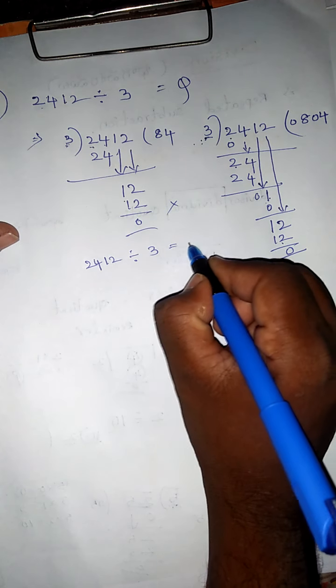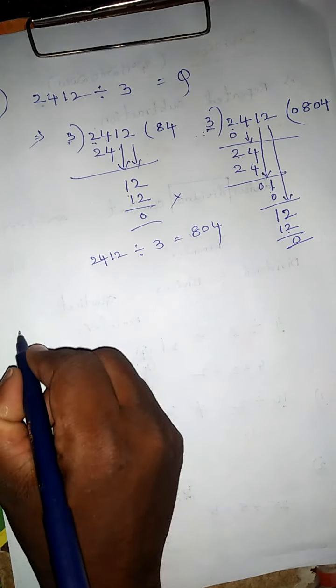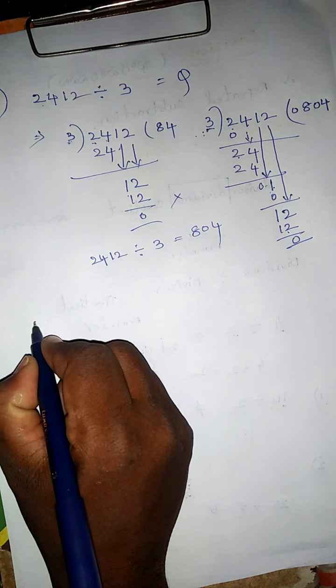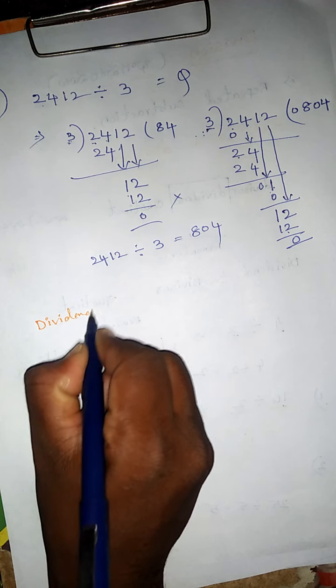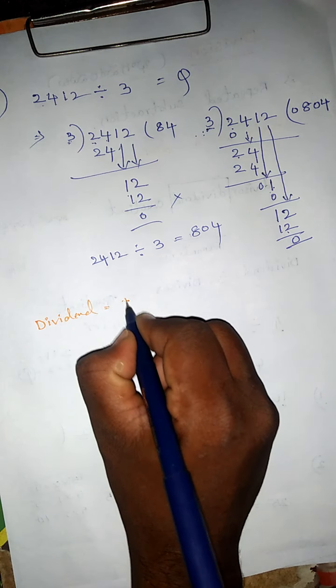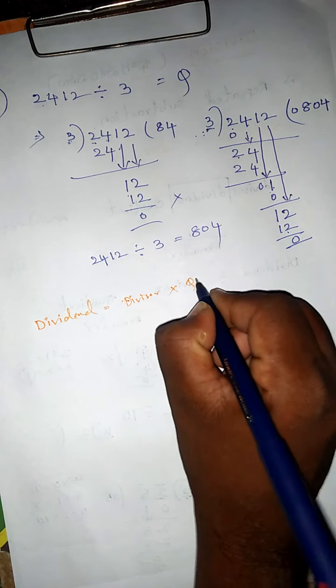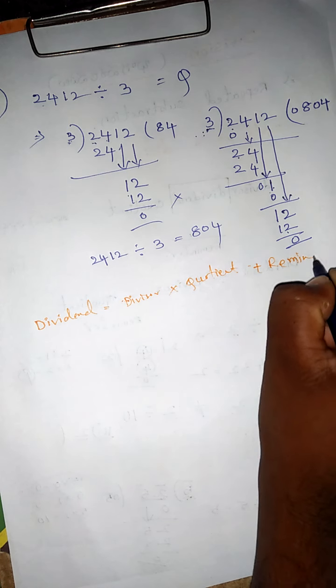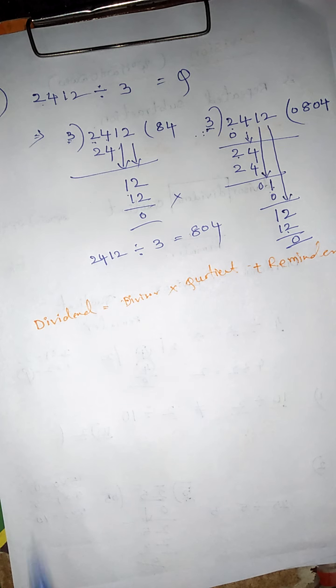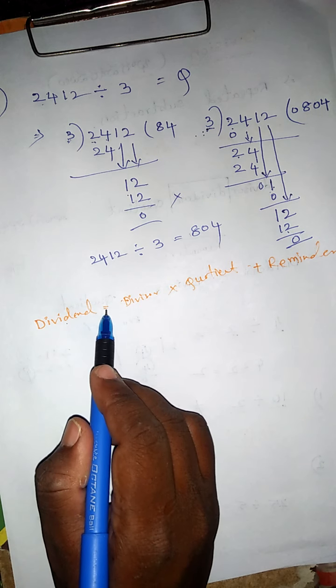To check if our answer is correct or wrong, the method is: dividend equals divisor times quotient plus remainder.